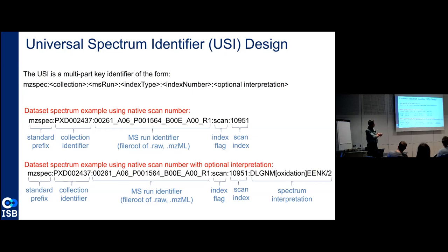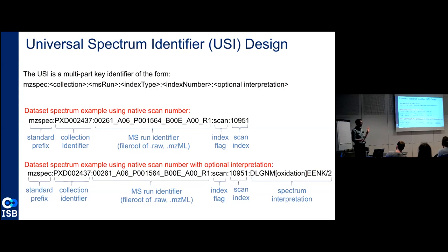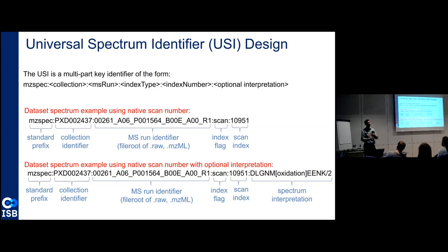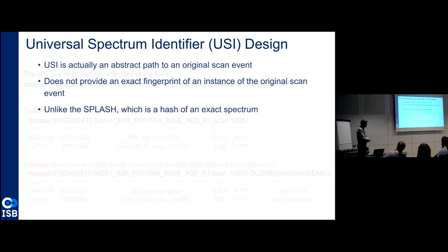The optional interpretation extension basically looks something like this: for the same scan number, you can suggest a possible interpretation of that spectrum. It's not required — if you're just talking about a spectrum, you don't need it. But it seemed quite useful to be able to say, I want to refer to this particular spectrum, and I think this is what the interpretation is. This is the basic design — there are lots of details and it's a long specification, but I'll give a high-level overview.